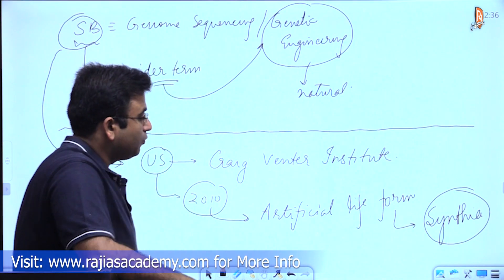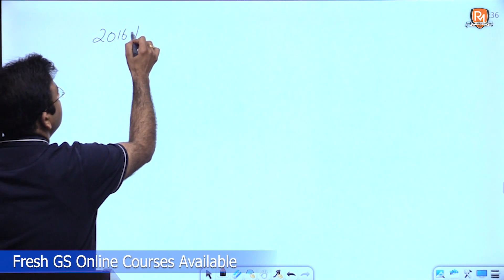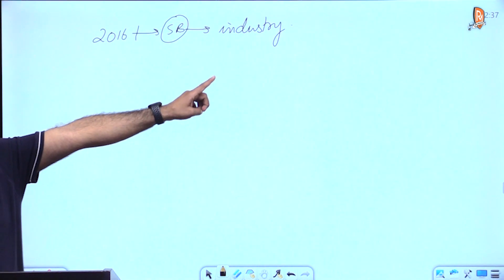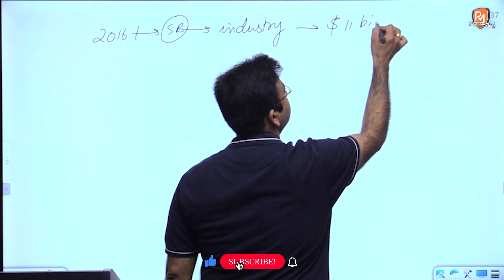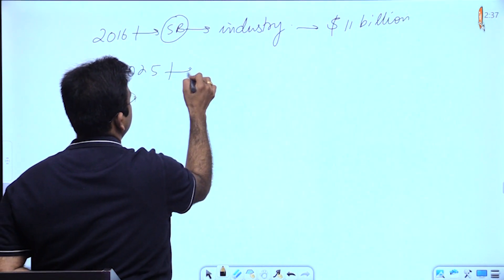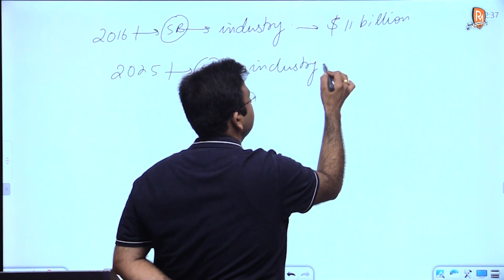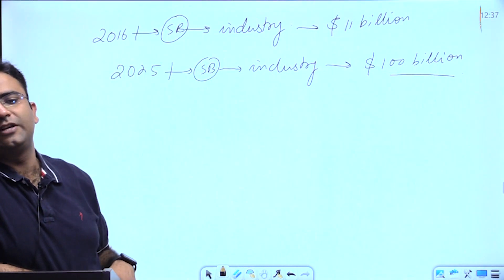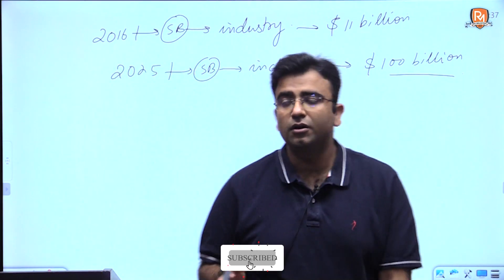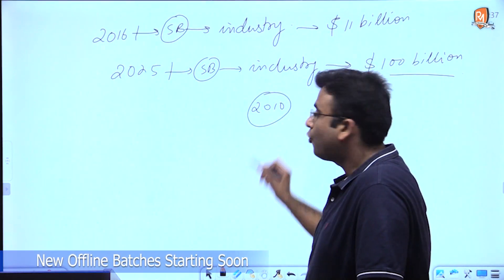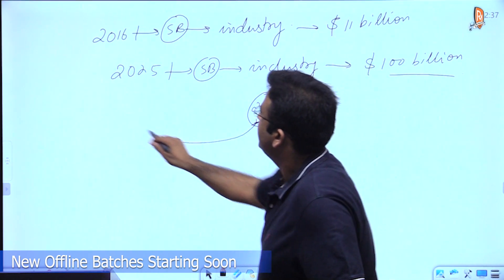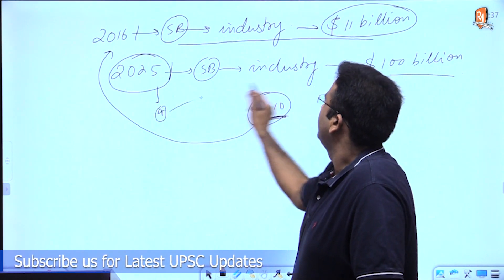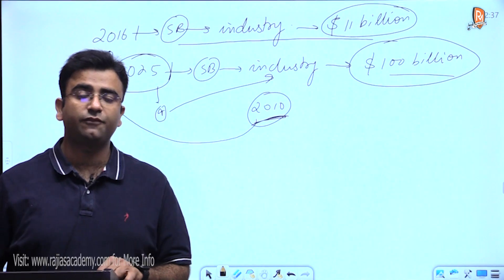In the year 2010, when synthetic biology was in its infancy, by 2016 it became a full-fledged industry with a lot of applications, valued at 11 billion US dollars. It is projected that by 2025, the synthetic biology industry is going to be worth 100 billion US dollars — emerging in 2010, becoming an 11 billion dollar industry within 6 years, and projected to reach 100 billion within 15 years, making it one of the fastest growing industries.